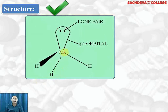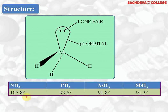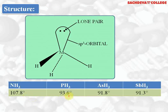Structure of hydrides: they have a pyramidal shape and undergo sp³ hybridization, pyramidal due to the presence of a lone pair of electrons. Bond angle in ammonia is 107.8°, in phosphine it is 93.6°, in arsine 91.8°, in stibine 91.3°. Bismuth hydride does not undergo hybridization.